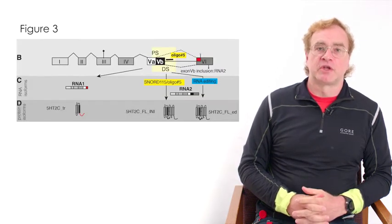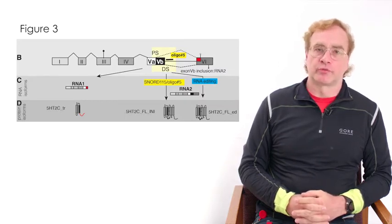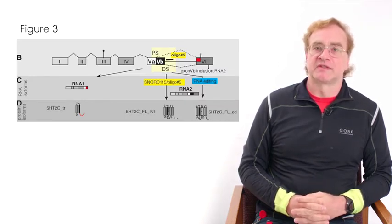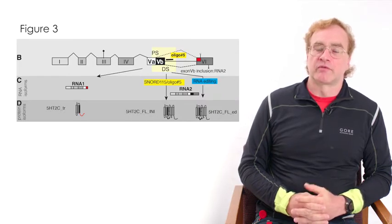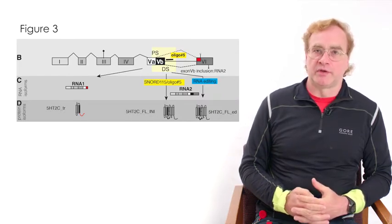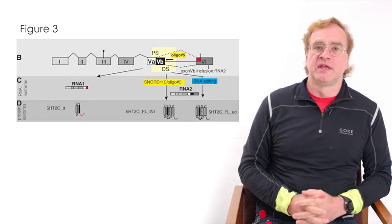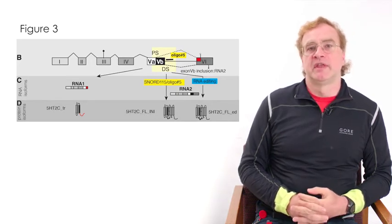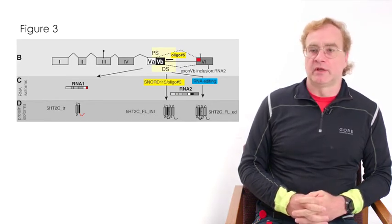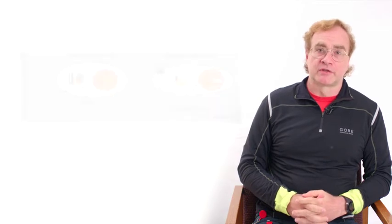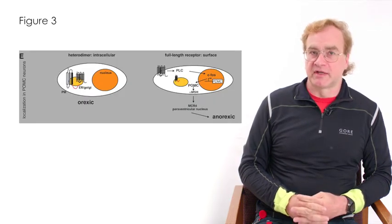The receptor pre-messenger RNA generates two main classes of proteins. One of these classes is a truncated receptor that has only three transmembrane domains, and the other class is the full-length receptor having seven transmembrane domains. The full-length receptor reaches the surface of the cells and can signal.